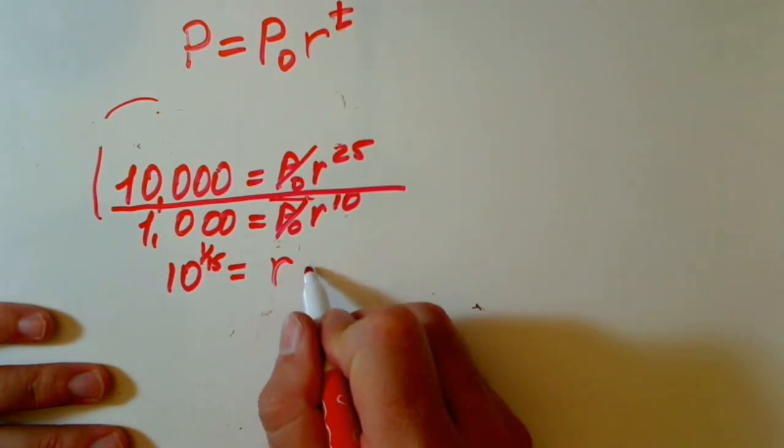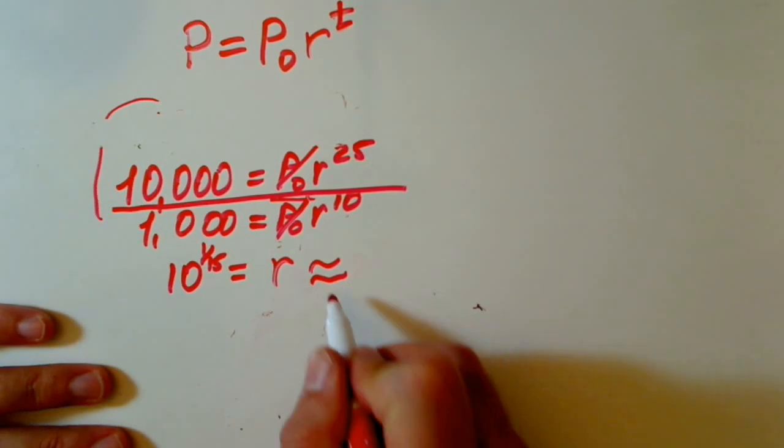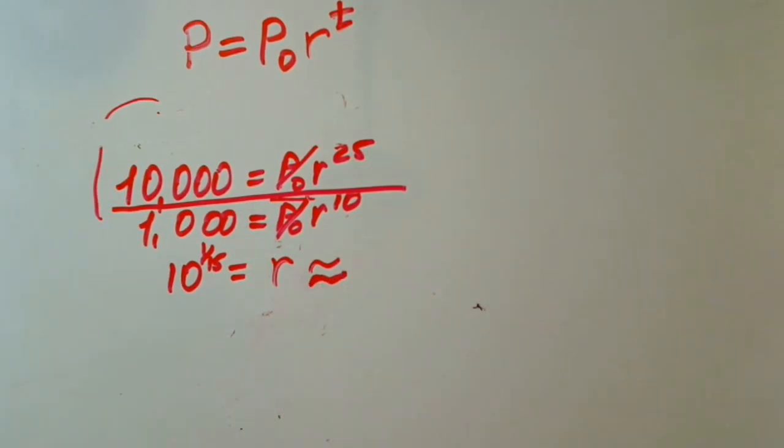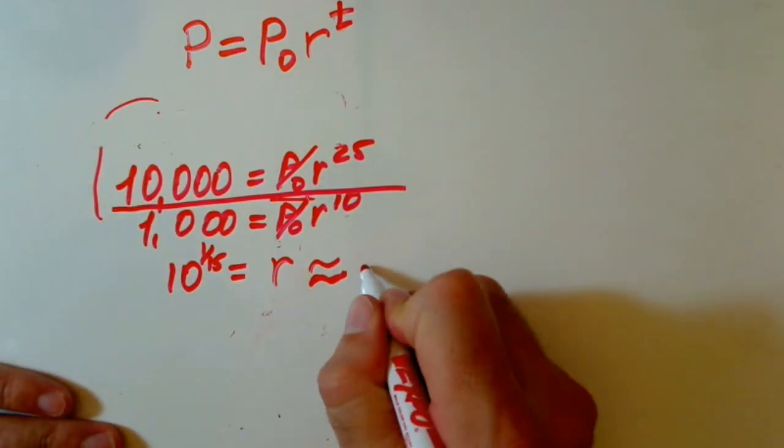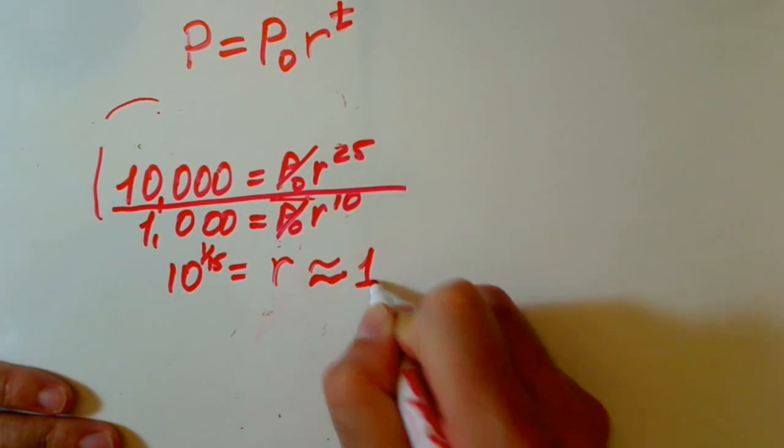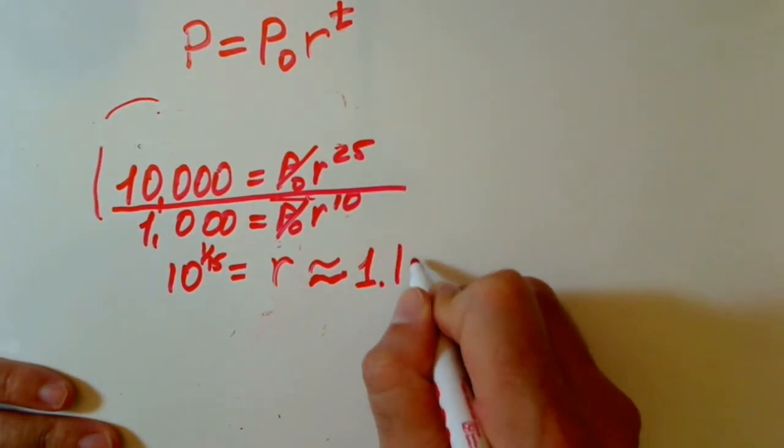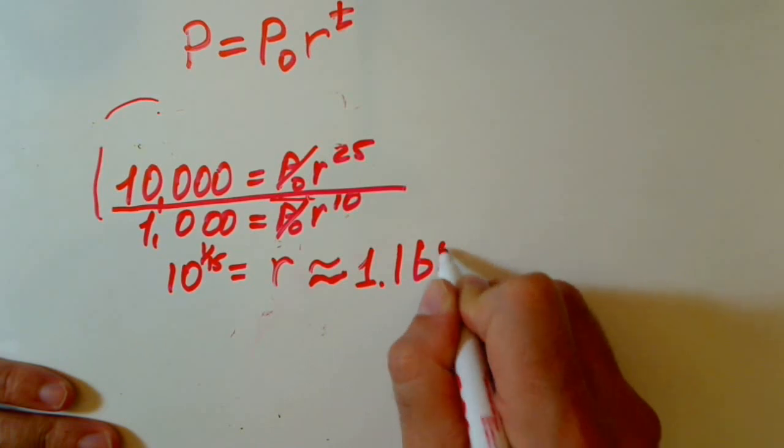We have r actually equals 10 raised to the 1/15th. And we can approximate actually this value for our problem, for the model, and 10 raised to the 1 over 15, we have r equals actually 1.1659.